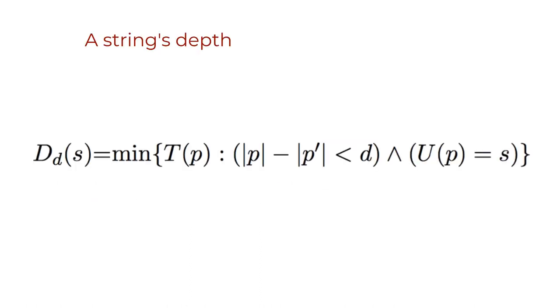Formally, for a finite string, Bennett's first logical depth measure is defined as follows. Let s be a string and d a significance level. A string's depth is given by the following formula. That reads,